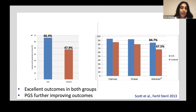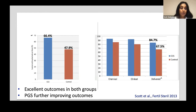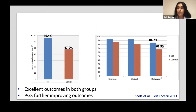They found that the sustained implantation rate — the chance of one embryo resulting in a pregnancy — was generally good in both arms, with higher rates in the PGS arm. When looking at clinical outcomes such as clinical pregnancy and delivery rate, the delivery rate per embryo transferred was significantly higher in the PGS arm compared to the control, which was the purpose of their study — demonstrating improved implantation efficiency per embryo transferred with PGS.